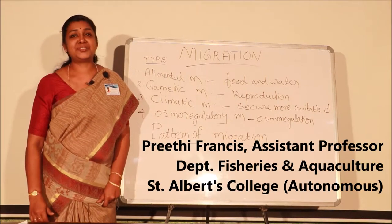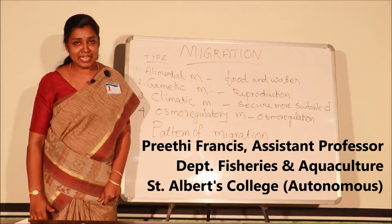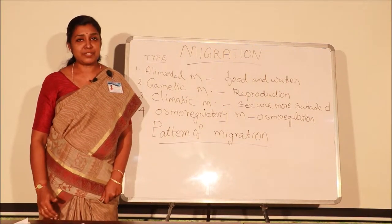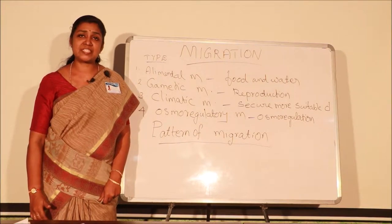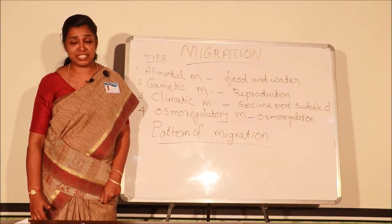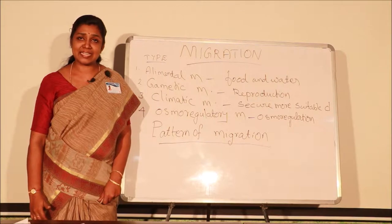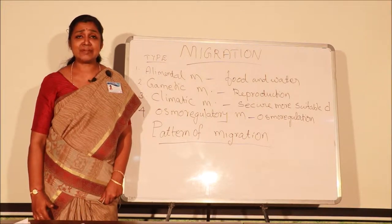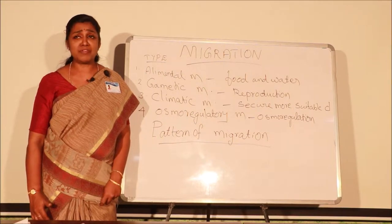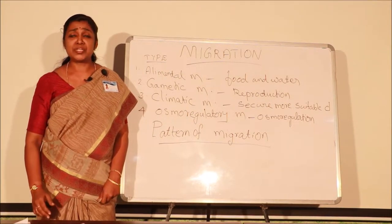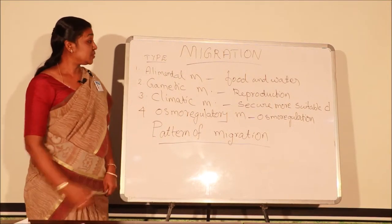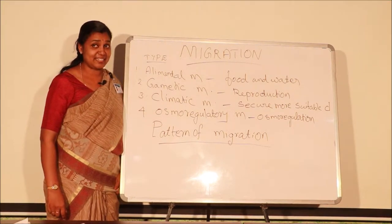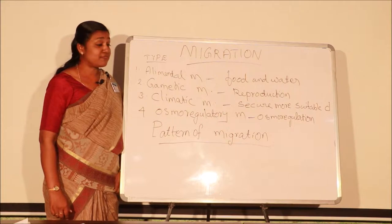Good morning everybody. Today my topic is migration — migration of fishes. The group of fishes moving from one place to another is known as migration. In 1978, Robin R. Baker defined migration as the act of moving from one spatial unit to another. So let's see the types of migration.